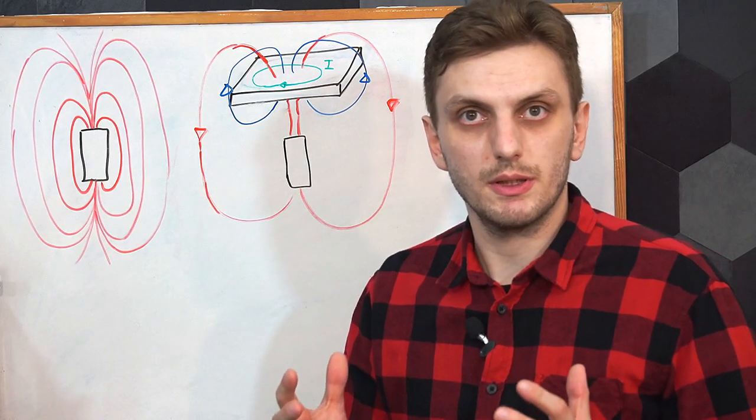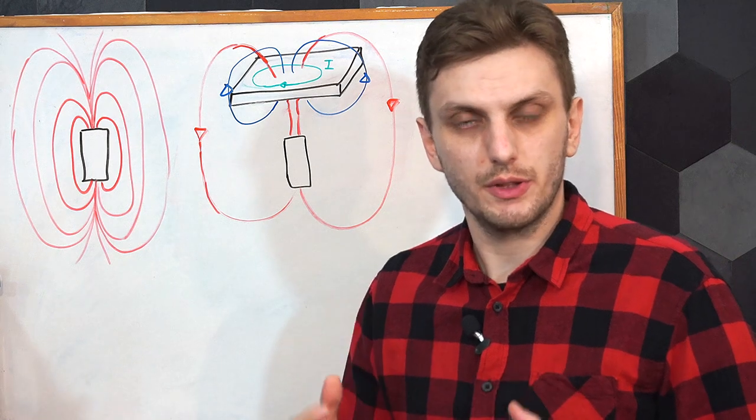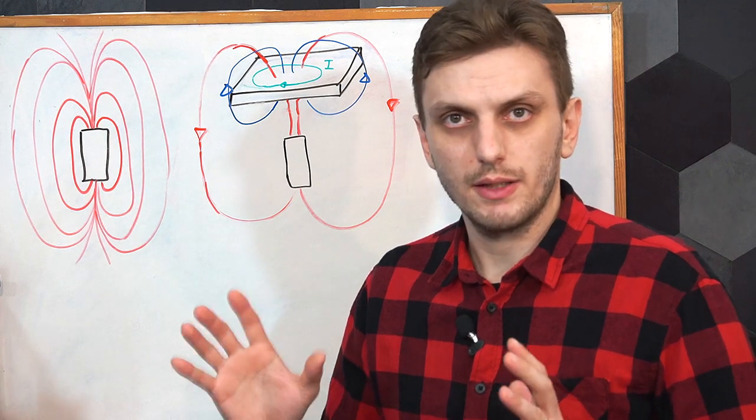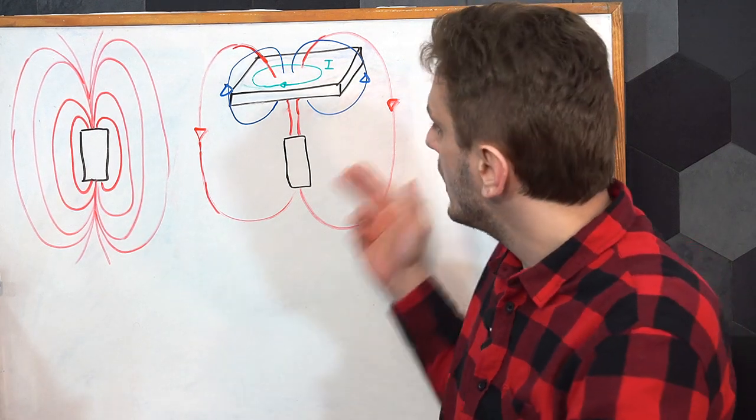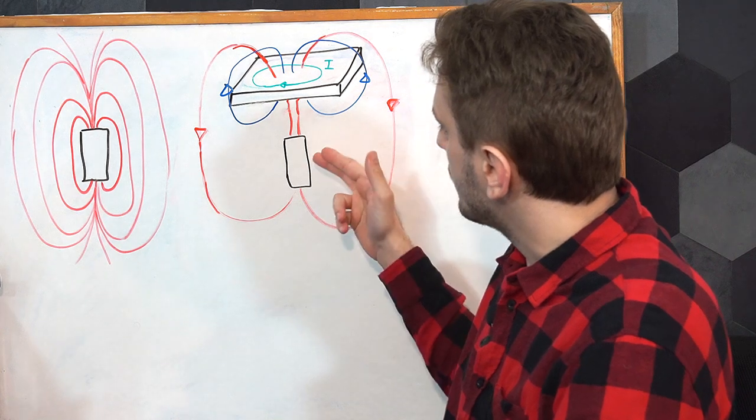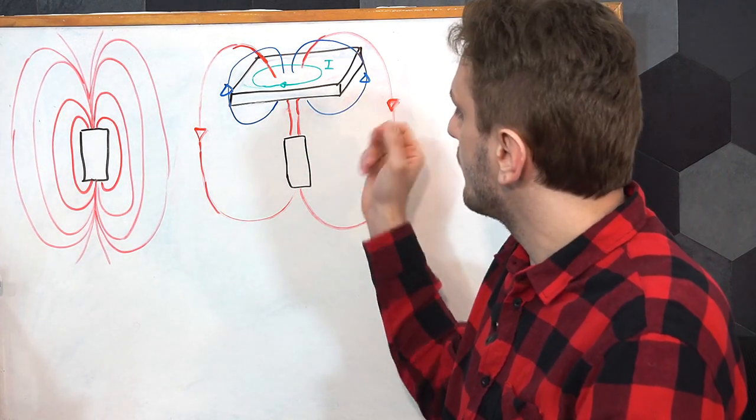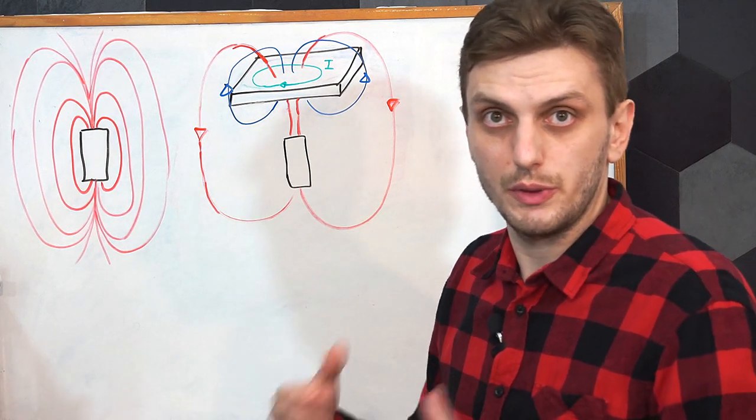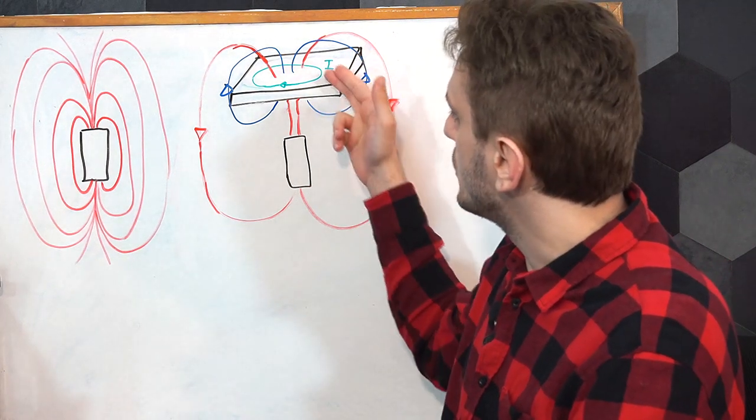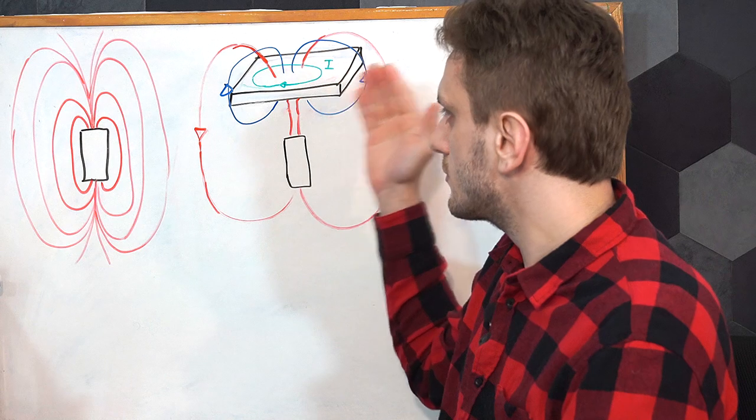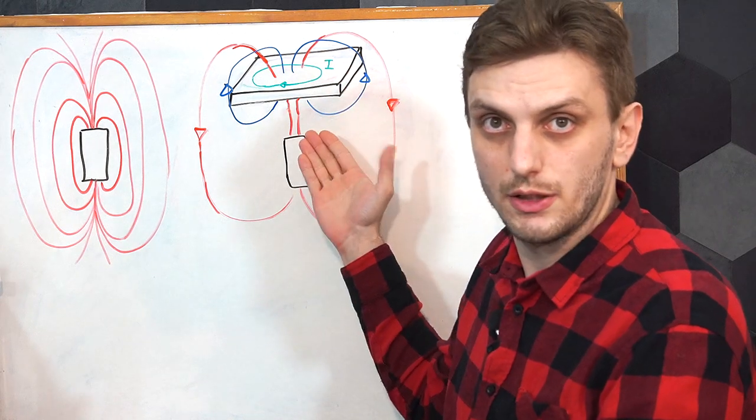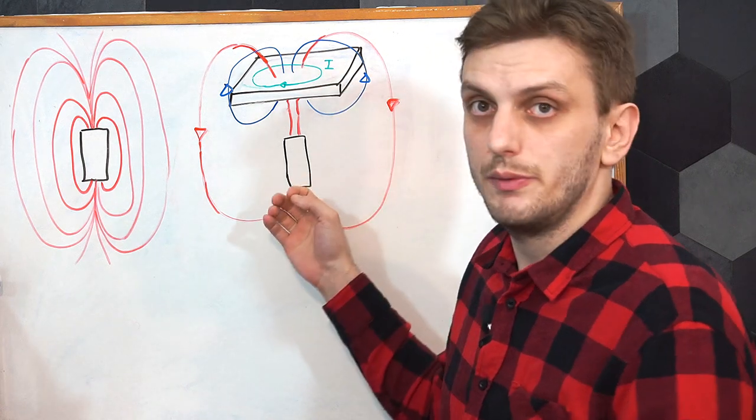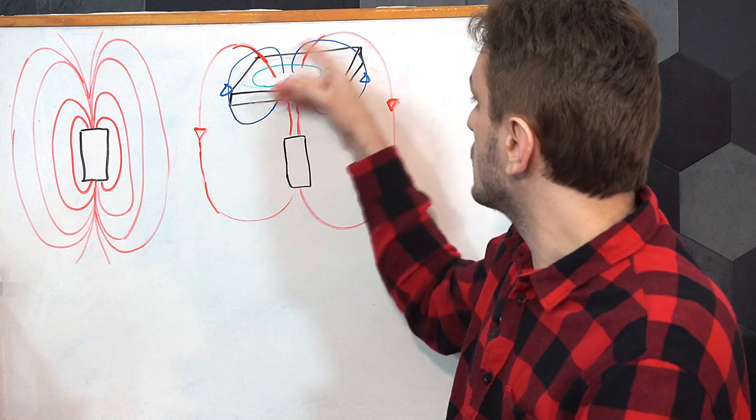The other main method of shielding involves the use of electrically conductive materials, things like steel or copper. The way these work as a magnetic shield is that the field coming from our noise source hits the material, and if this is a variable magnetic field—this will not work at DC, only with oscillating magnetic fields—these fields will induce a current into the conductive material. This is what's called an eddy current. This current passing through the conductive material will generate its own magnetic field.